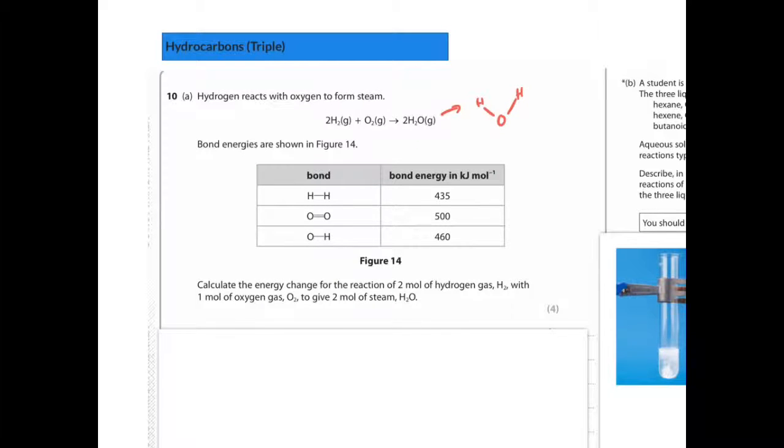Hydrogen reacts with oxygen to form steam, you can see that here. Bond energies are shown in figure 14. So forming this bond, or this bond contains 435 kilojoules per mole, and so on.